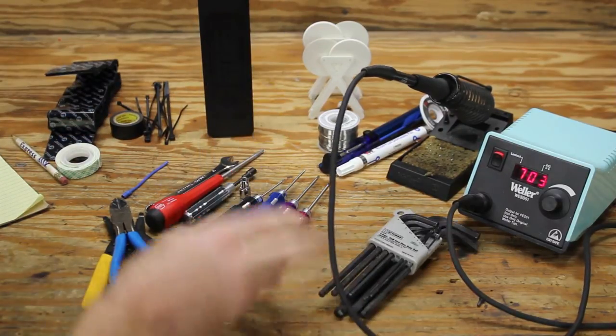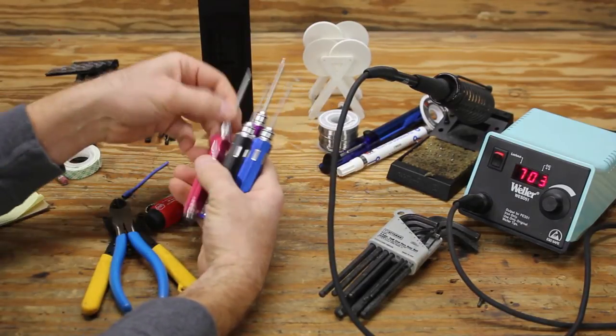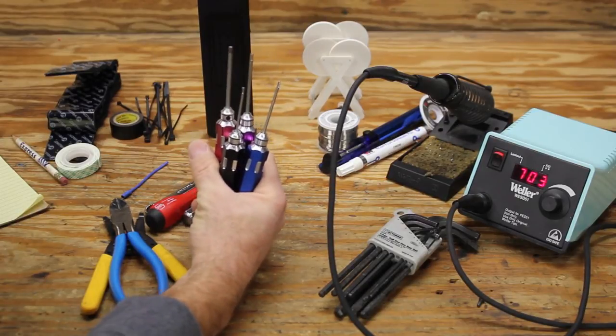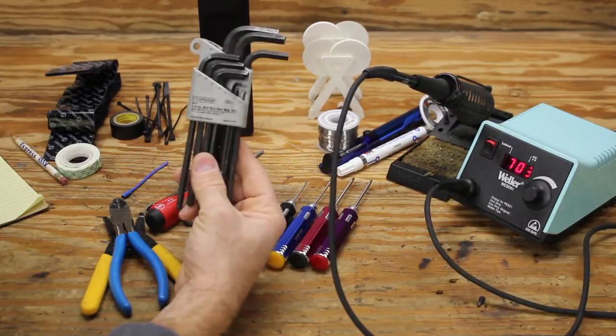You can either buy a set like this from Sears, or you can buy something like this from a hobby shop. These are made by Align. They have those four sizes. So these would be called Allen drivers. These are called Allen wrenches.